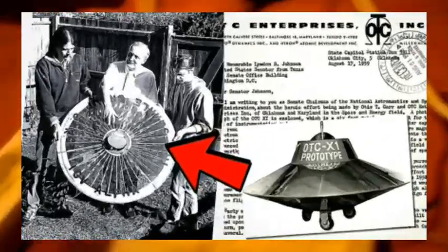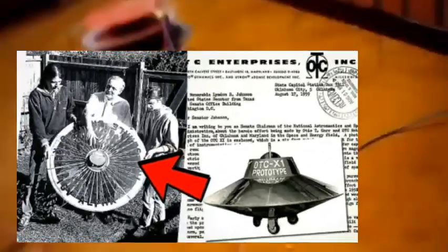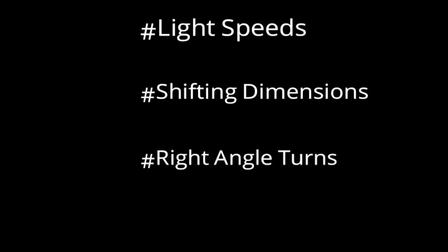That happened, but maybe not everyone believed these objects were real. And here's where the UFOs come in. These objects are capable of light speeds, shifting of dimensions, right-angle turns, and several other phenomena we couldn't fully mention right now.